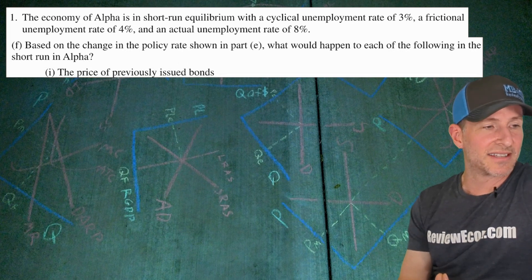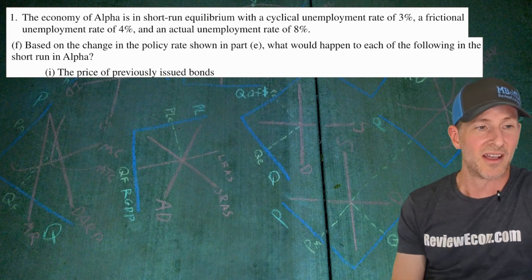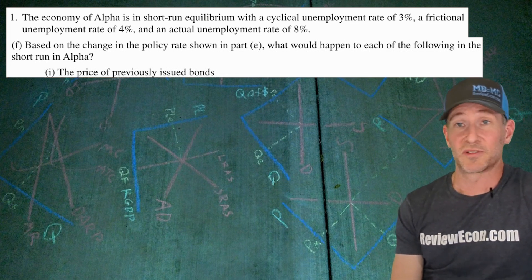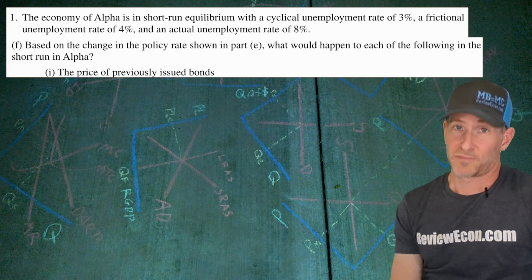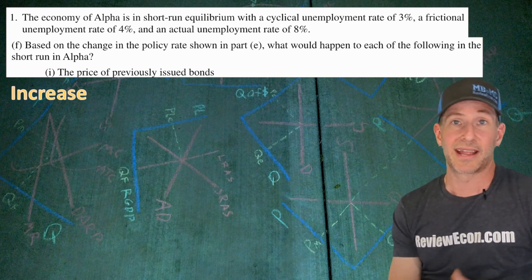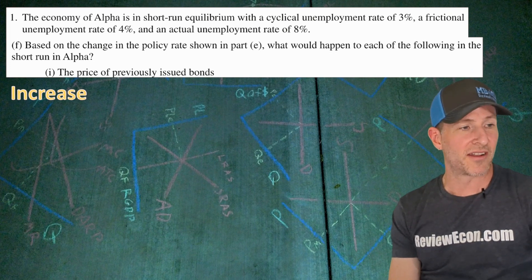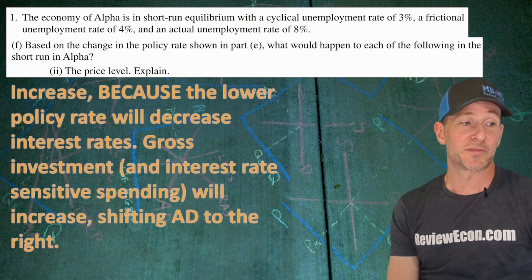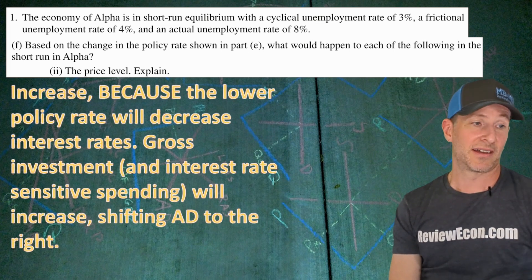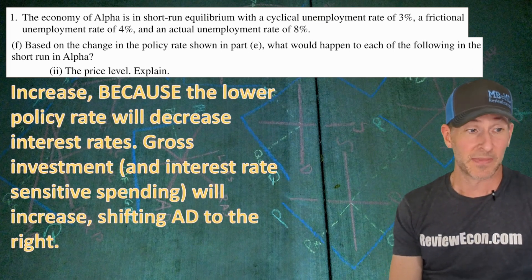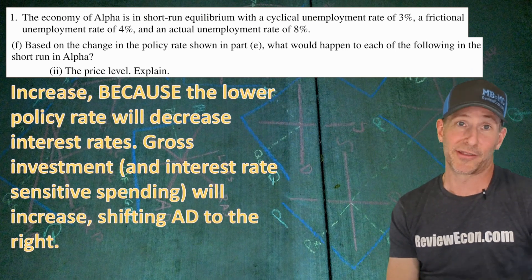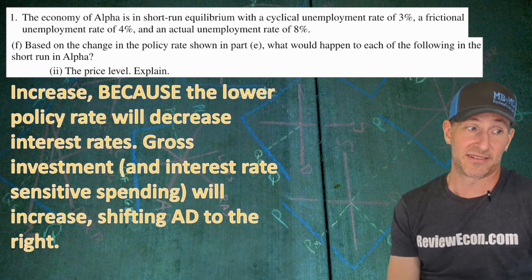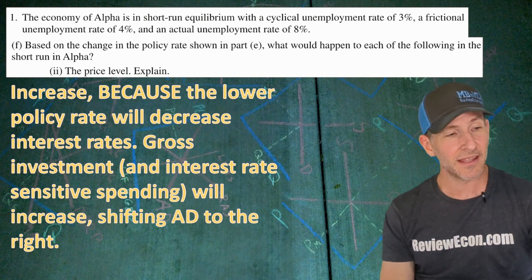For part F, based on the policy rate change we just showed — remember it decreased — what would happen to each of the following in the short run in Alpha? The price of previously issued bonds: interest rates went down and prices of bonds move in the opposite direction, so the answer is increase. What happens to the price level? The price level is going to increase because the lower policy rate will decrease interest rates, which means gross investment and other interest-rate-sensitive spending will increase, shifting aggregate demand to the right — and that is why the price level will rise.